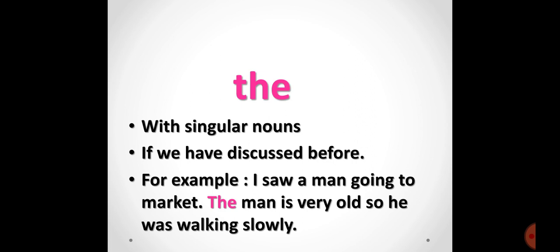In the first sentence we said 'I saw a man' — here we used 'a' before man, because we were mentioning this man for the first time. In the second sentence, 'The man is very old', we are referring to the same man again. Because this man was already mentioned in the sentence above, we now use 'the' before man.